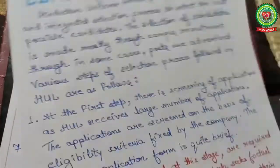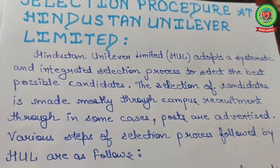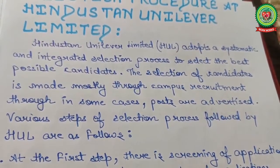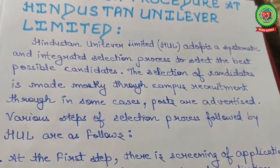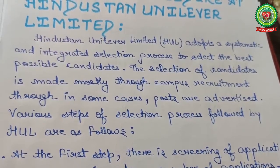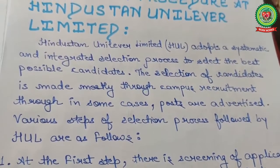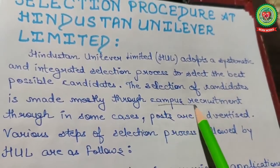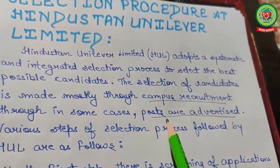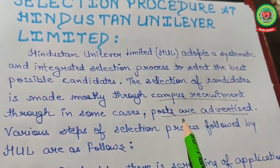Now I'm going to discuss the selection procedure of HUL — Hindustan Unilever Limited. HUL adopts a systematic and integrated selection process to select the best possible candidates. The selection of candidates is made mostly through campus recruitment; in some cases posts are also advertised. So HUL uses two recruitment methods: number one, campus recruitment; number two, advertisement.